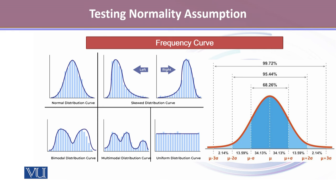When we draw a frequency curve for various data sets, the distribution can show us a left skewed (positive skew) or right skewed (negative skew), or it could be bimodal, multimodal, or a uniform distribution curve. But a perfect bell shape is how the frequency curve for the normal probability distribution looks like.